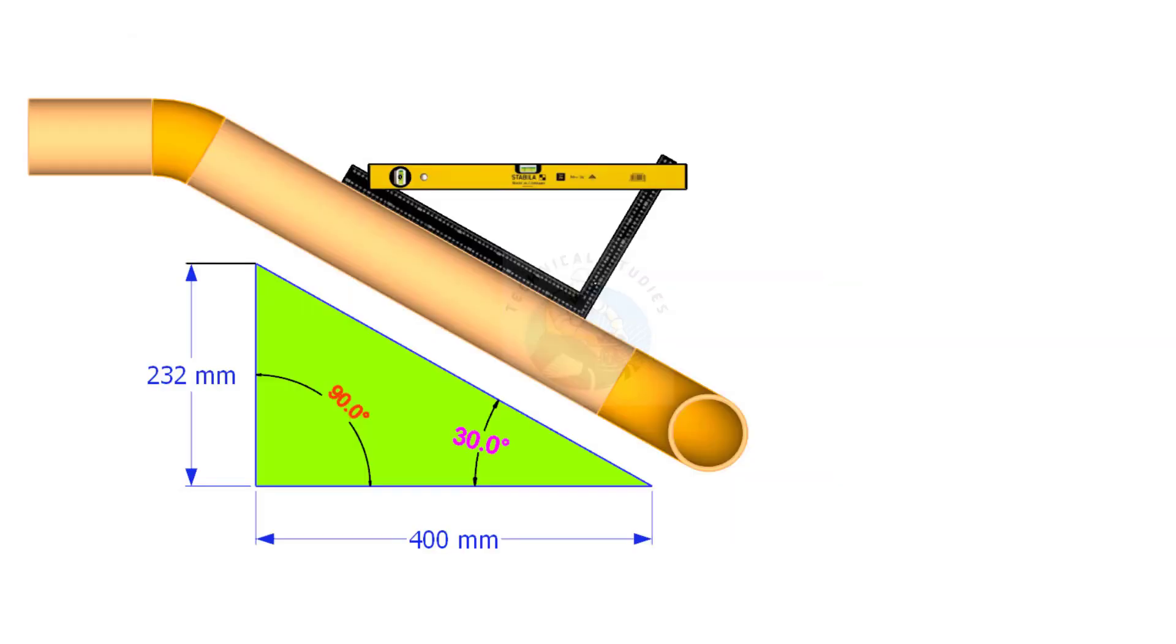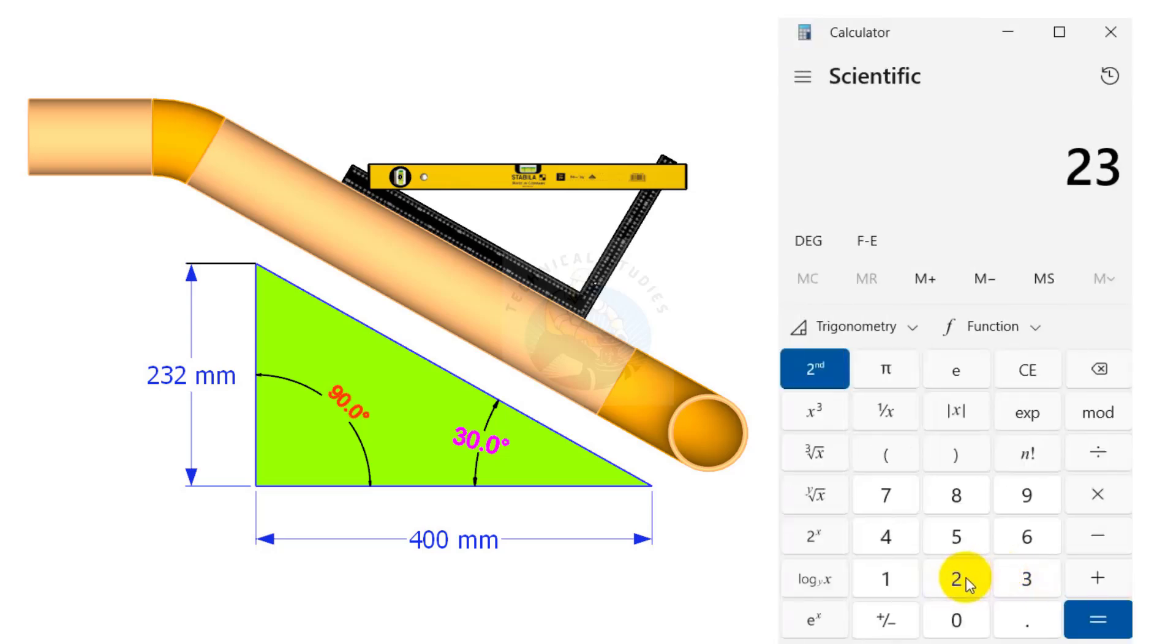Let us calculate another example. 232 divided by 400 is 0.58. Press the shift tan or the second tan. The answer is nearly 30 degrees.